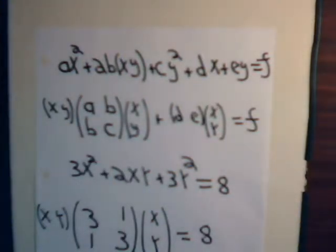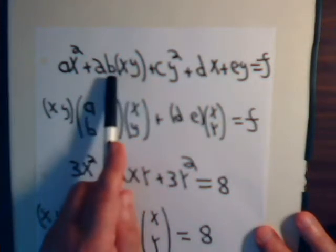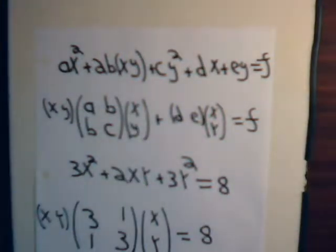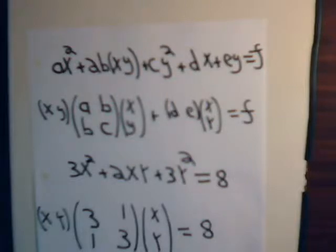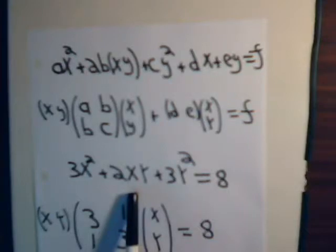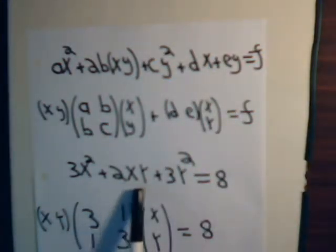In the last video we handled a simpler problem where there was no xy term. In that case we could simplify the equation by completing the square, which led to a translation of the origin of the x, y coordinate system. Now we have a simple equation but with an xy term to contend with — d and e are zero here, but we have that cross term.